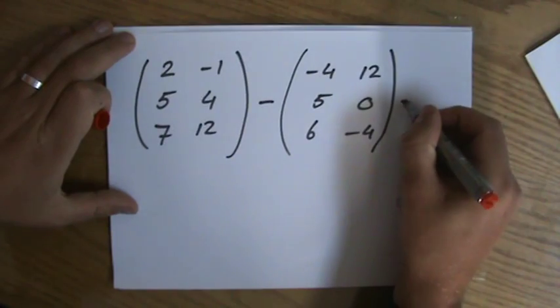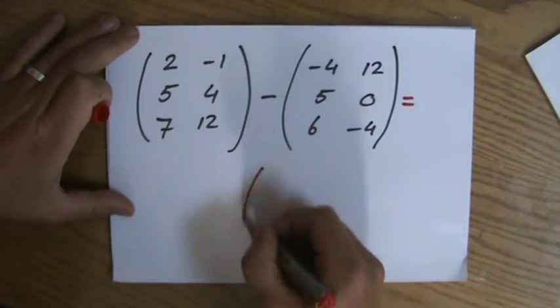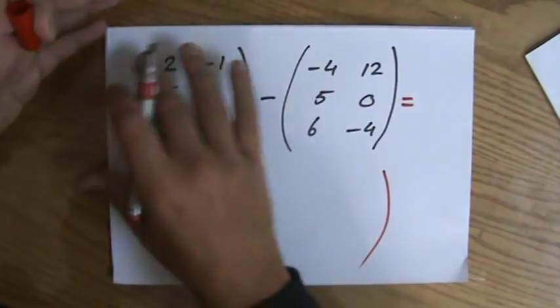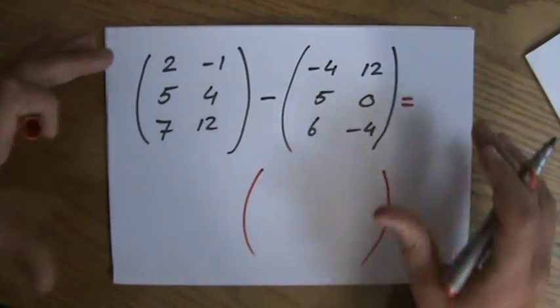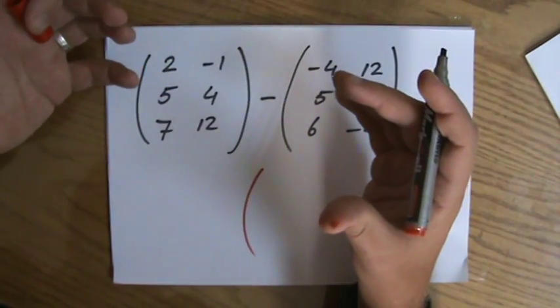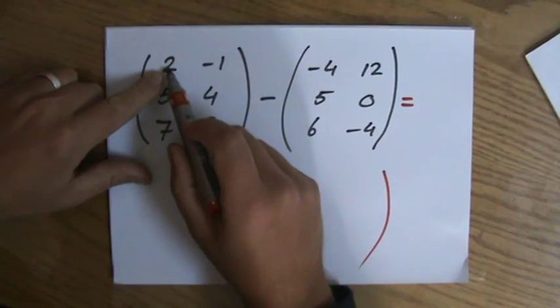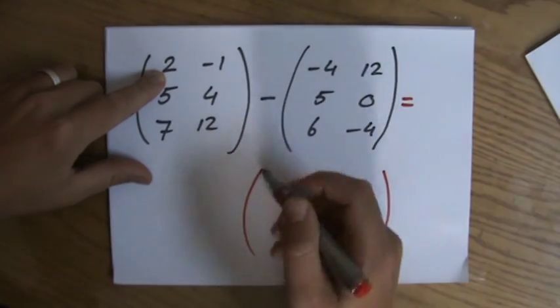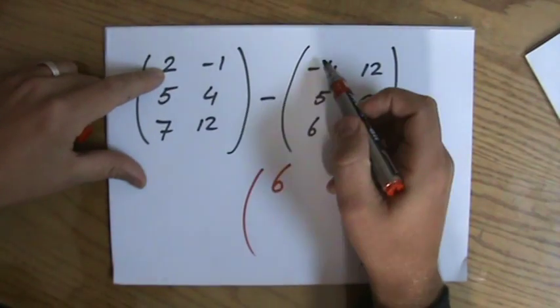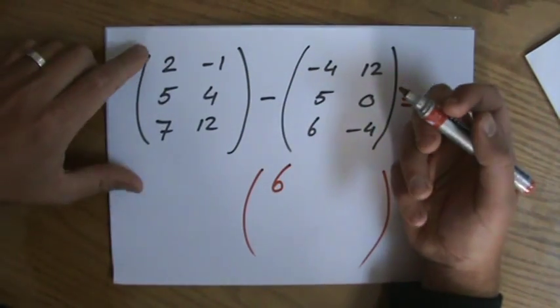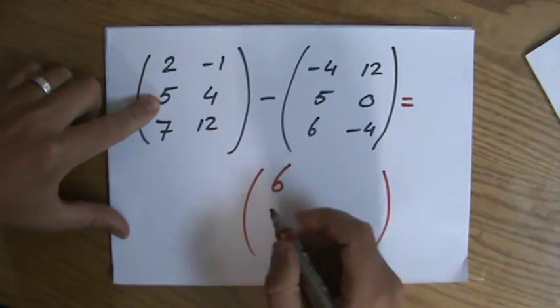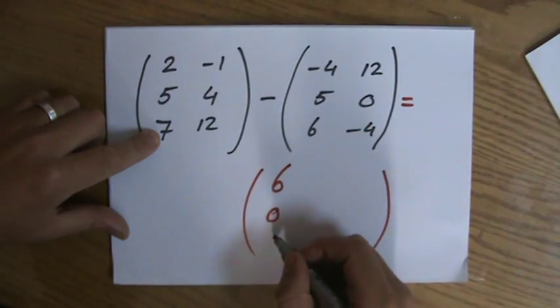I'm going to subtract the two matrices from each other. I'll just put some big brackets there. A matrix is just a way to represent information—it could be any type. All I do is compare the positions and subtract them from each other. So 2 minus minus 4—that's 6. Careful there, subtracting a negative is actually 2 plus 4.